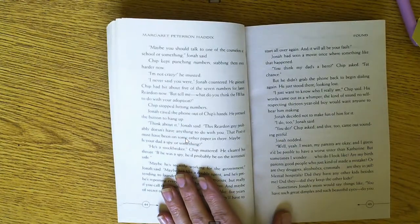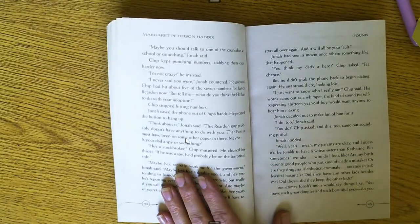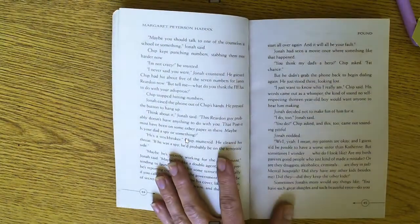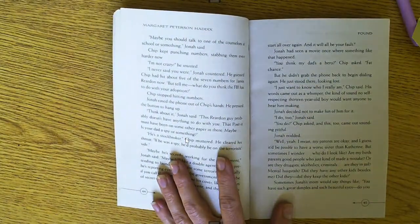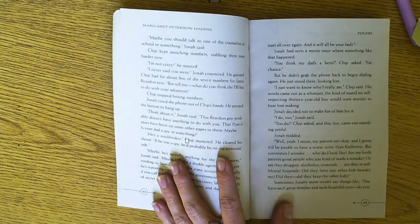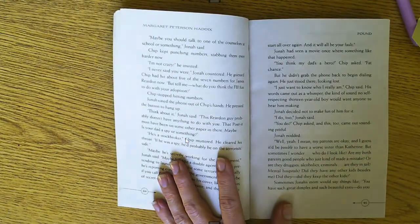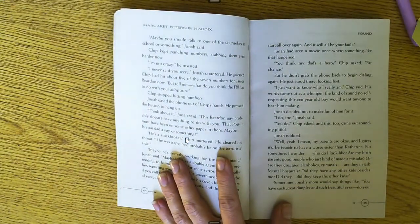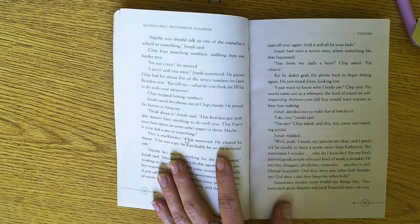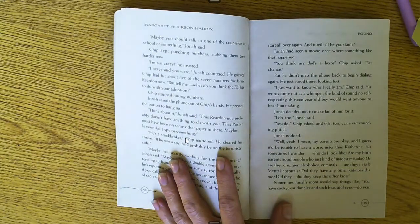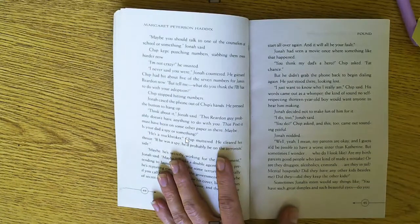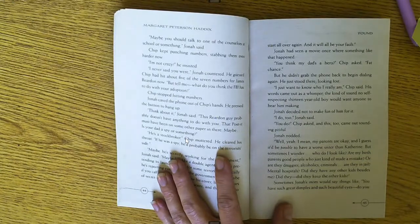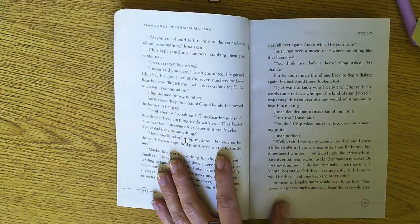I do too, Jonah said. You do? Chip asked. And this too came out sounding pitiful. Jonah nodded. Well, yeah. I mean, my parents are okay. And I guess it'd be possible to have a worse sister than Catherine. But sometimes I wonder, who do I look like? Are my birth parents good people who just kind of made a mistake? Or are they druggies or alcoholics or criminals? Are they in jail, mental hospitals? Did they have any other kids besides me? Did they keep the other kids?